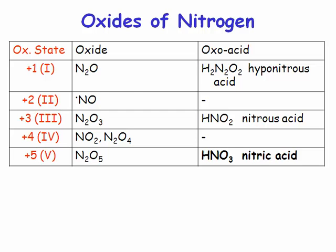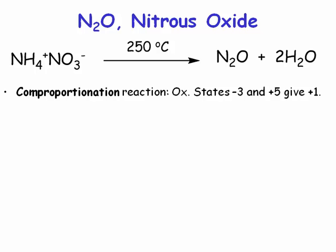Nitric acid is nitrogen in oxidation state +5. How do we make nitrous oxide? Nitrous oxide is made through a comproportionation reaction — a reaction where you have two species of the same element in different oxidation states. We have ammonia where nitrogen is in oxidation state −3, and nitric acid where nitrogen is +5. The average of −3 and +5 is +1. Heating ammonium nitrate decomposes it to give nitrous oxide and water, with nitrogen in oxidation state +1.